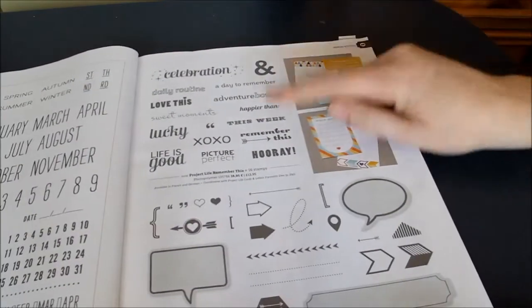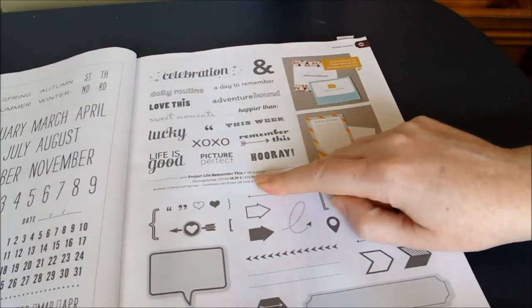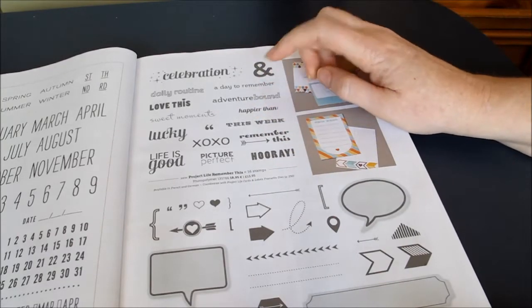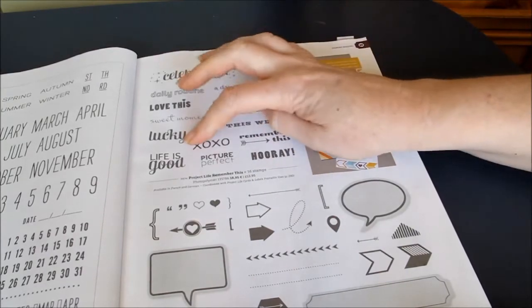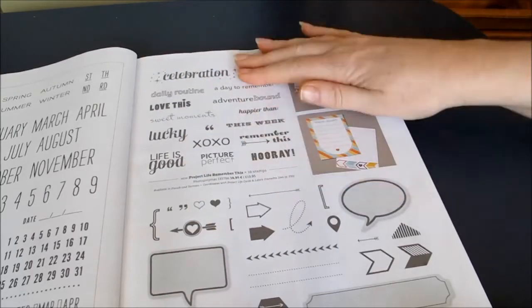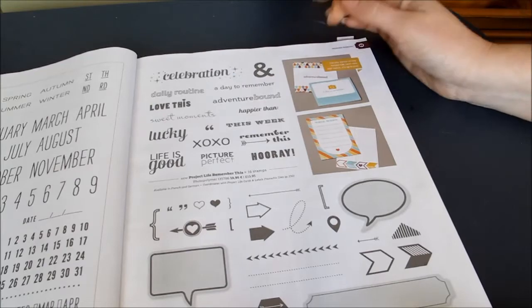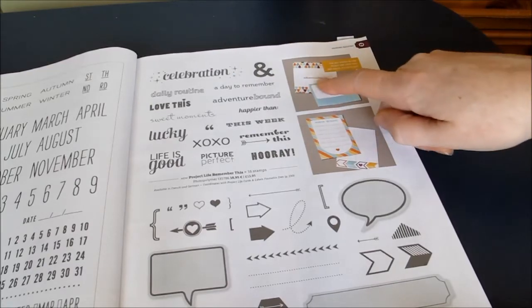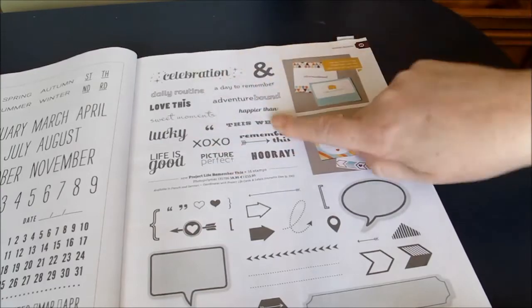So that's that stamp set. Then across the page we've got Remember This, 16 stamps on here. And this has got words on it. So Adventure Bound, Day to Remember, This Week, Lucky, Love This, Sweet Moments, things like that. So that's going to be excellent for adding to your journal cards. There's a couple of pictures here to show some of the journal cards and what you've stamped on it from these stamp sets.